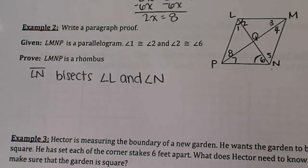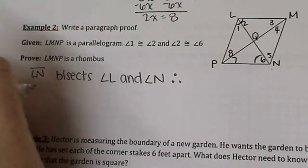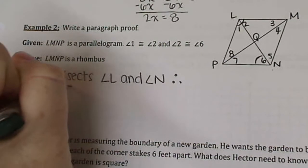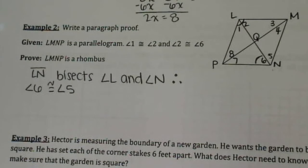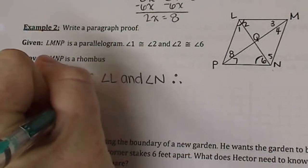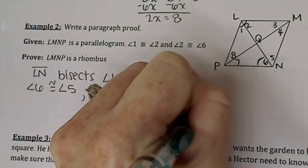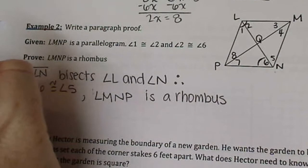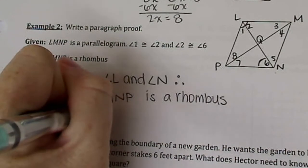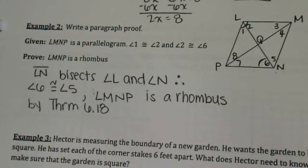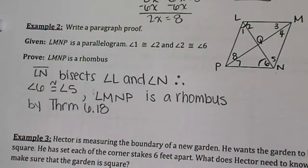Why is that important? Well, if it bisects it, 1 and 2 are congruent, and 2 is congruent to 6. And since it bisects it, therefore, angle 6 is also congruent to angle 5. Since it bisects my angles, my opposite angles, theorem 6.18 states that this is a rhombus. So LMNP is a rhombus by theorem 6.18. You can look that theorem up in your book if you want.